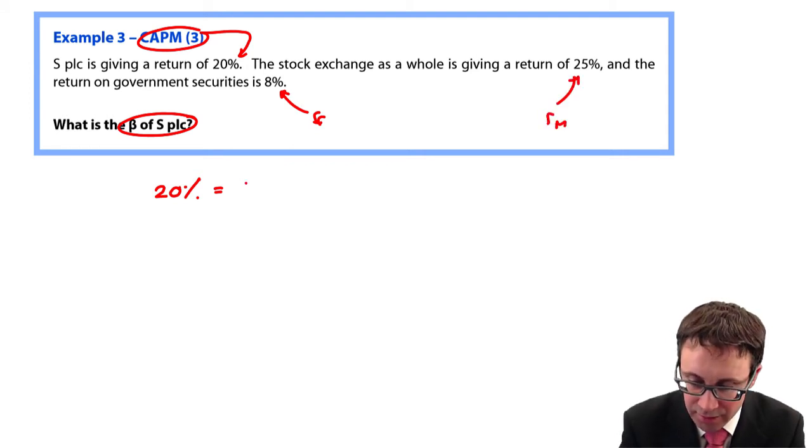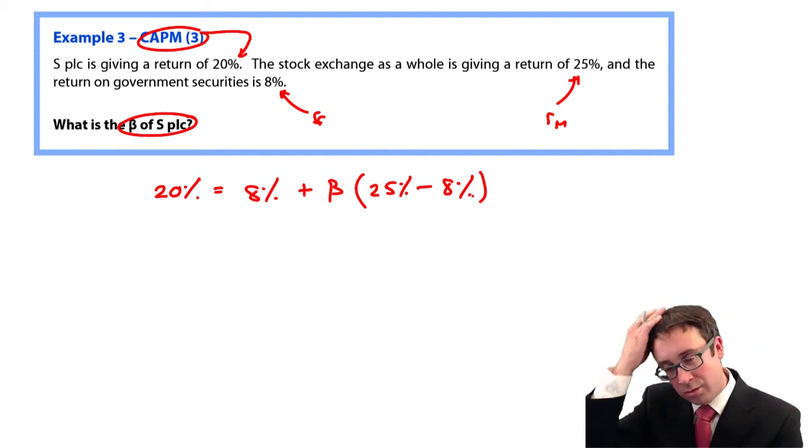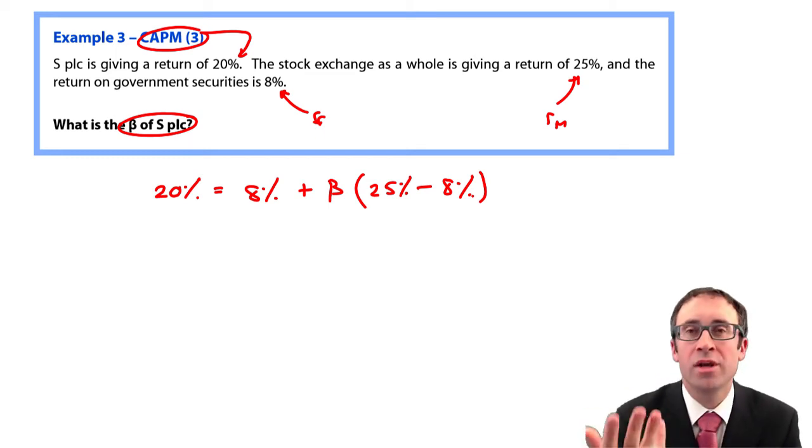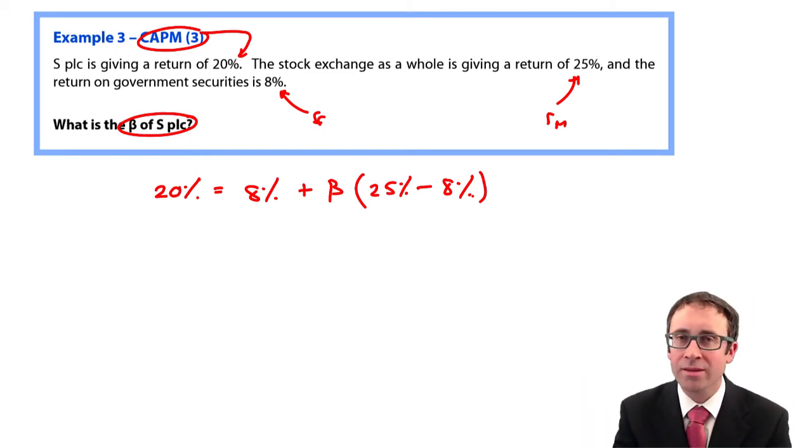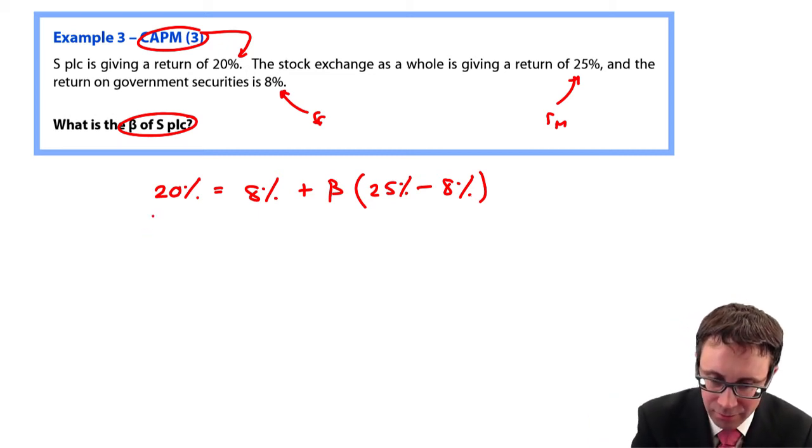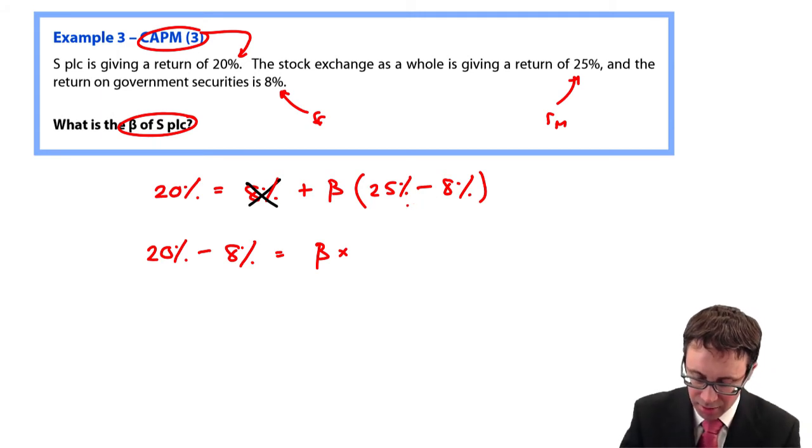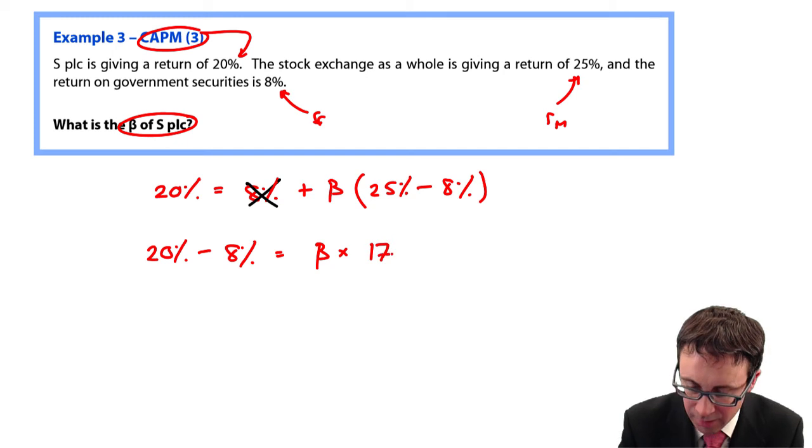RM is 25%. So 8% plus beta multiplied by 25% less 8%. It depends on how good your maths are, how quick you are at doing it. Some of you who love maths, those of you who don't like maths, let's have a look. So if we subtract 8% from both sides, we get rid of the 8% there.